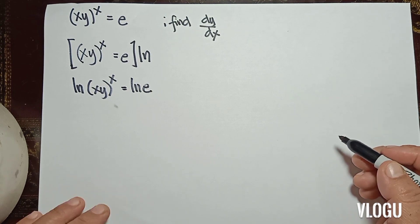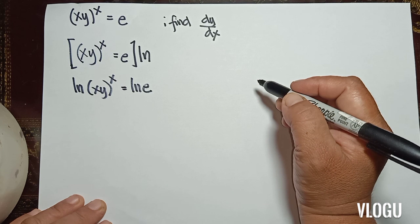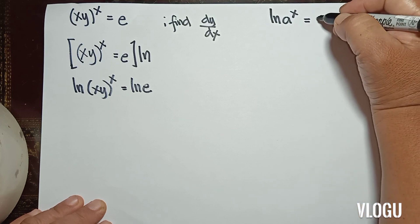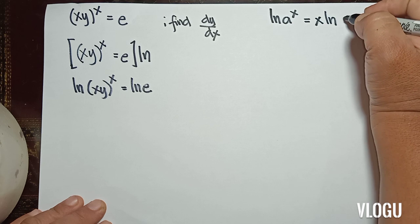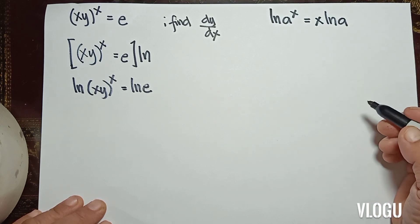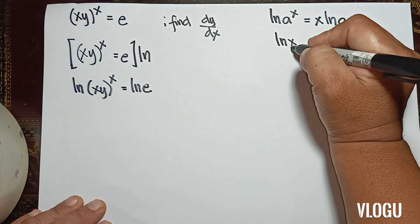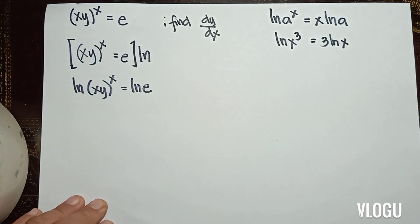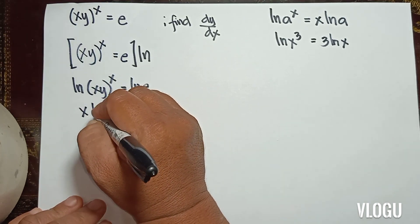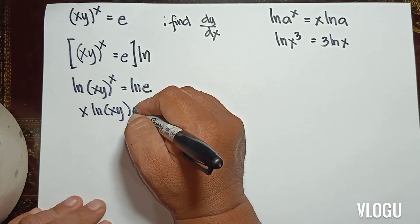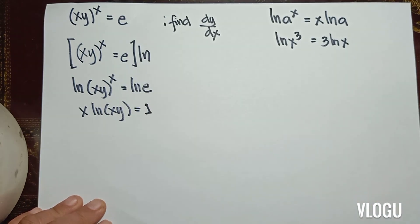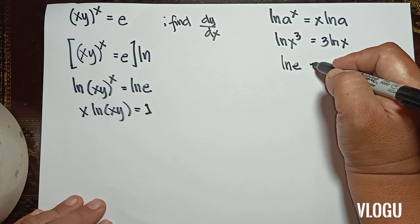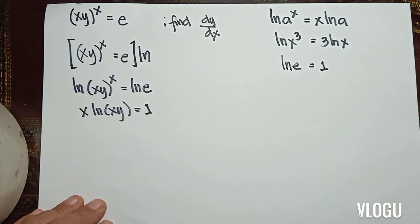From the definition, if we have ln of a to the x, the form will be x·ln(a). For example, ln of x cubed can be expressed as 3·ln(x). So here we have x·ln(xy) equal to 1, because the natural logarithm of e equals 1 by definition.